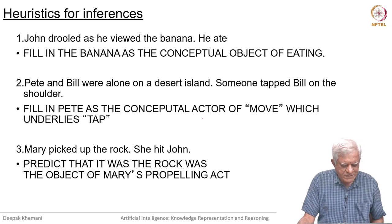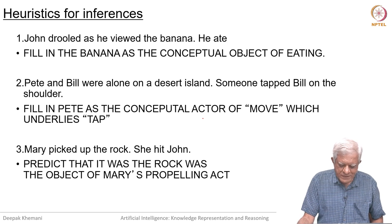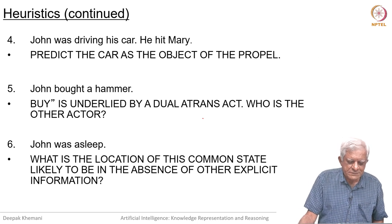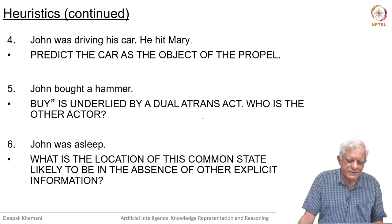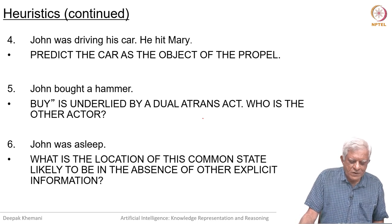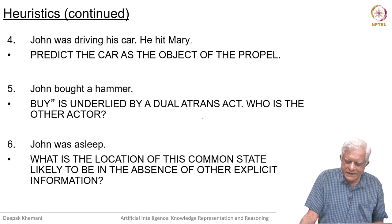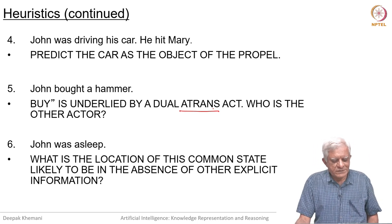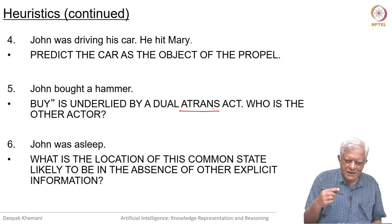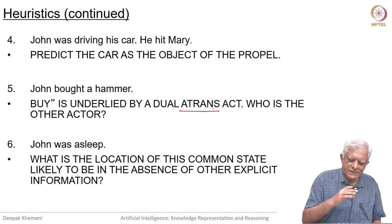Mary picked up the rock, she hit John — predict that the rock was the object of Mary's propelling act; 'propel' we will see is a primitive act. John was driving his car, he hit Mary — predict that the car is the object of the propel; the car was moving and the car hit Mary. John bought a hammer — 'buy' is underlain by a dual A-trans; A-trans is an abstract transfer meaning transfer of possession. Who is the other actor? He bought a hammer but who did he buy it from? You can expect that empty slot to be filled, and these rules will look for a filler for that slot.